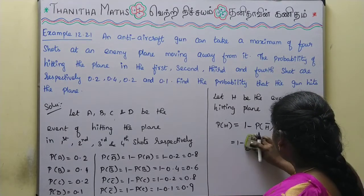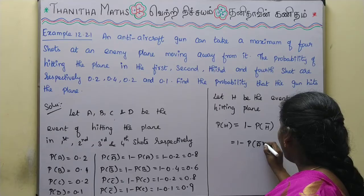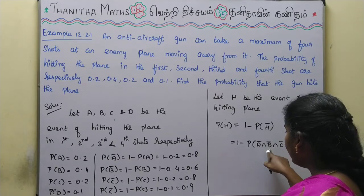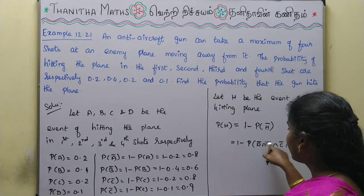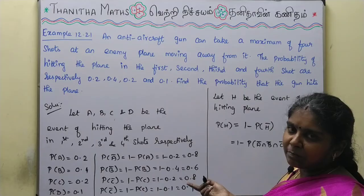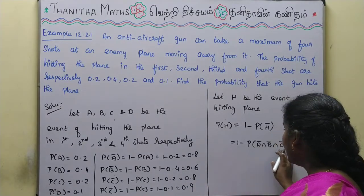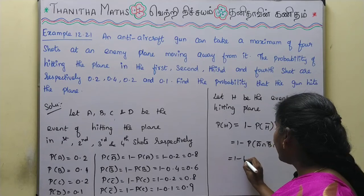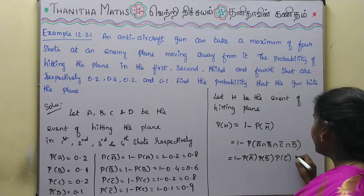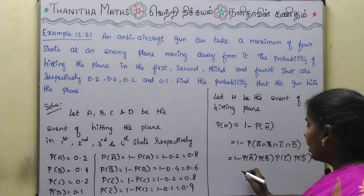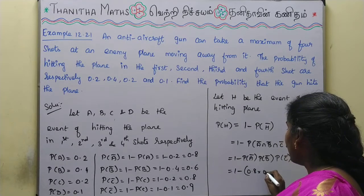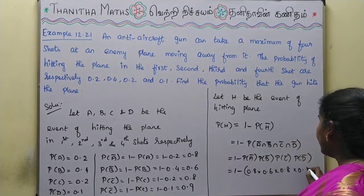Since the shots are independent events, P(H̄) = P(Ā) × P(B̄) × P(C̄) × P(D̄) = 0.8 × 0.6 × 0.8 × 0.9. Calculating: 0.8 × 0.6 = 0.48, then 0.48 × 0.8 = 0.384, then × 0.9.